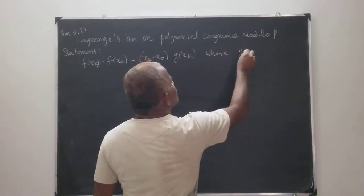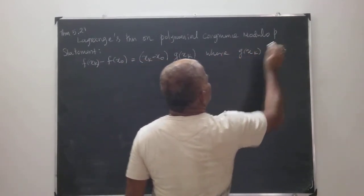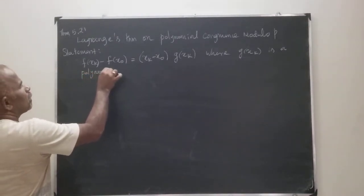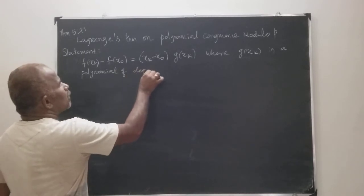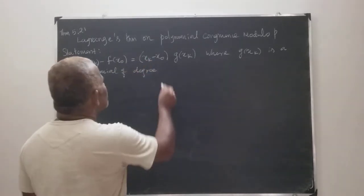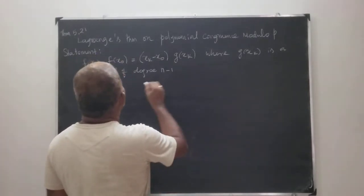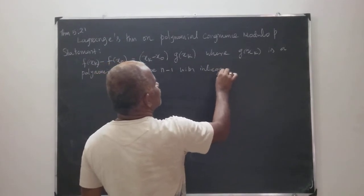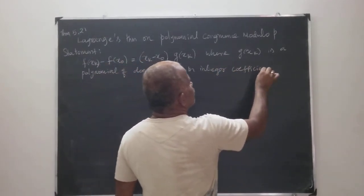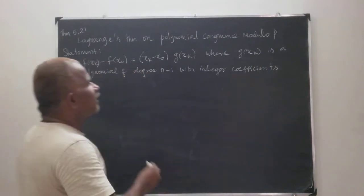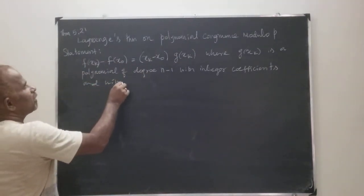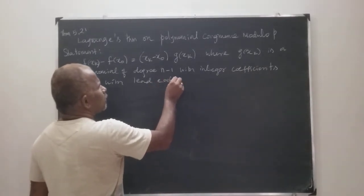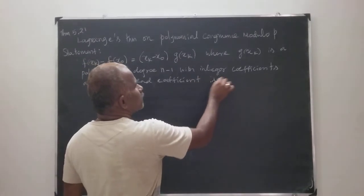Where G of xk is a polynomial of degree n minus 1, with integer coefficients and with leading coefficient Cn.